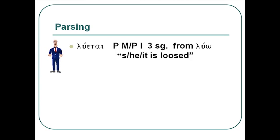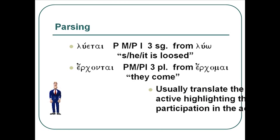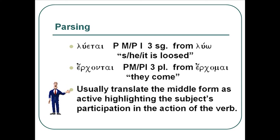For parsing, the format used is as follows. Luetai is a PMPI — present middle passive indicative — third person singular from luo, meaning 'he/she/it is loosed,' translating it as a passive. Luontai is a present middle passive indicative — PMPI — third person plural from erchomai, meaning 'they come,' translated in a more active way because the verb is a middle. Usually when you're doing the parsing and you see a middle form like this, take the active, highlighting the subject's participation in the action of the verb.